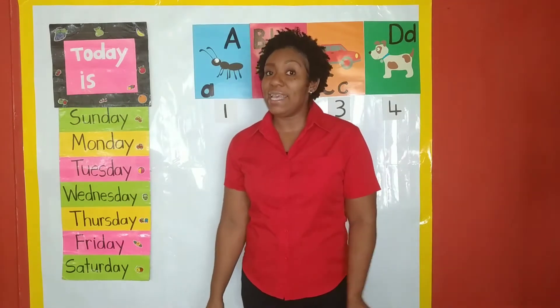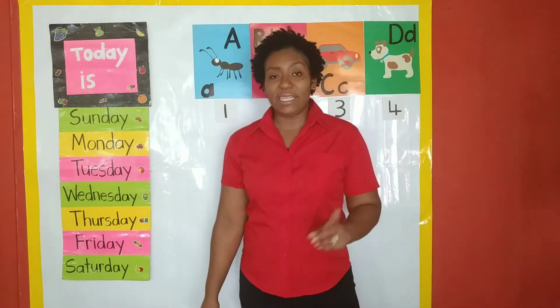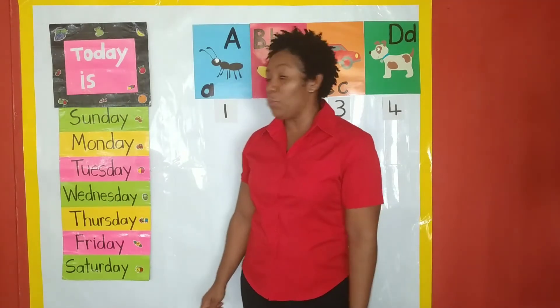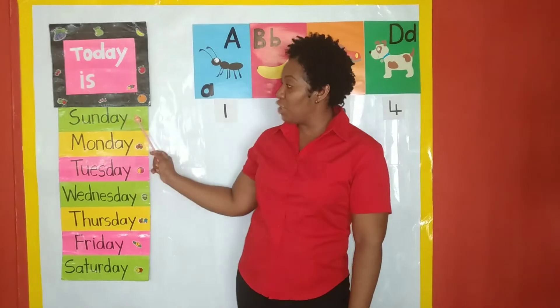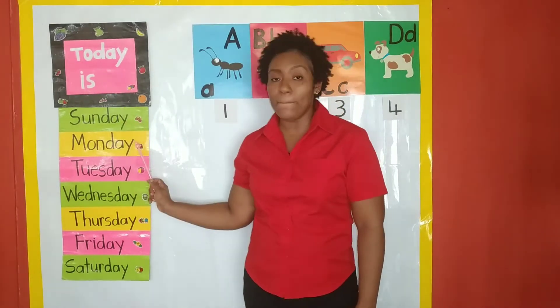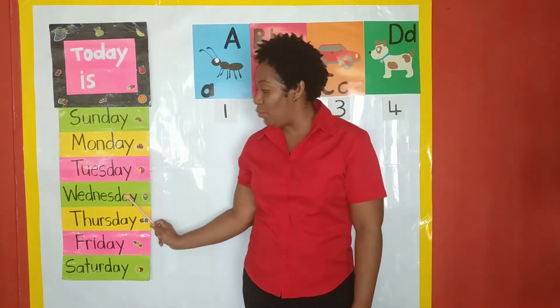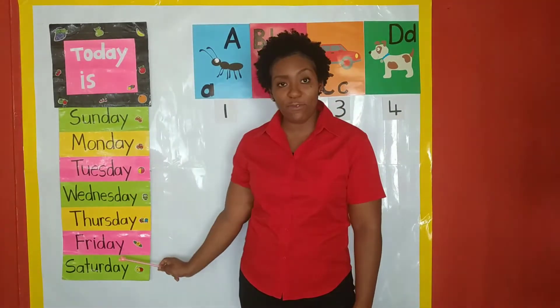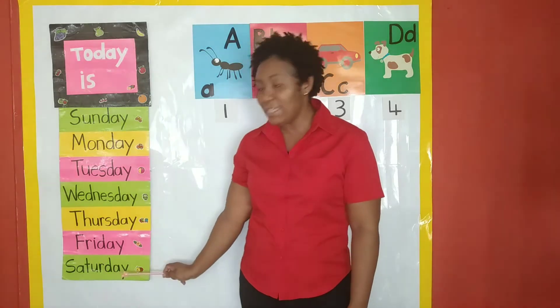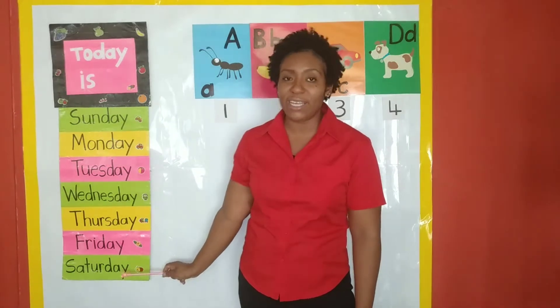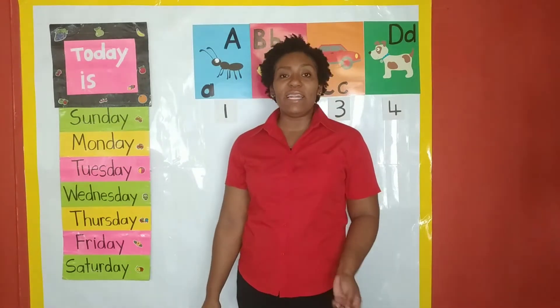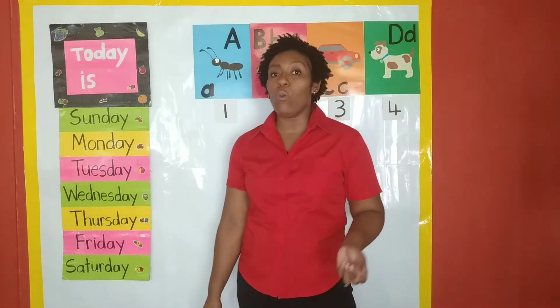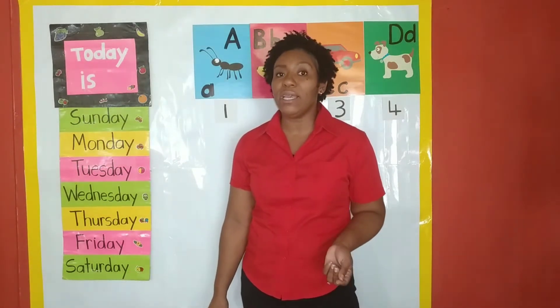Let's say them. The days of the week are Sunday, Monday, Tuesday, Wednesday, Thursday, Friday, Saturday. Seven days make one week.